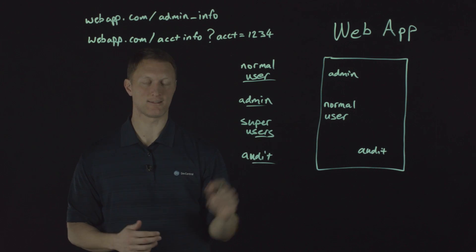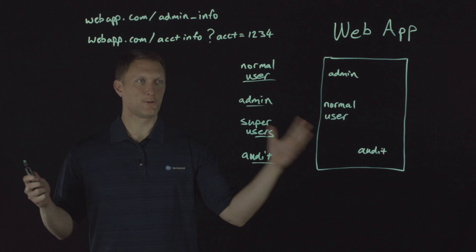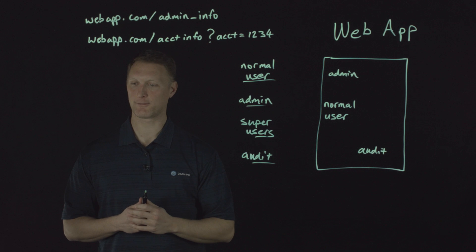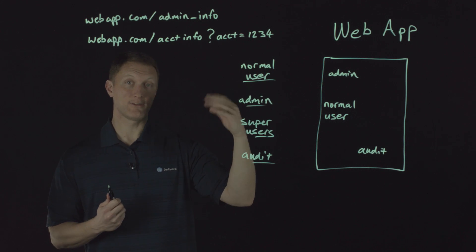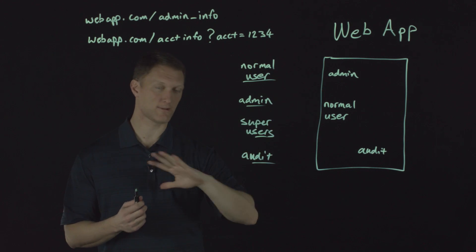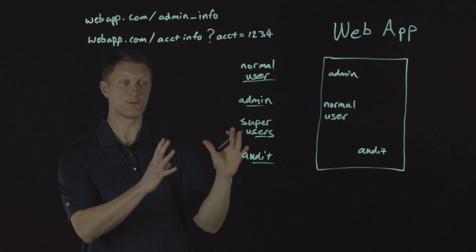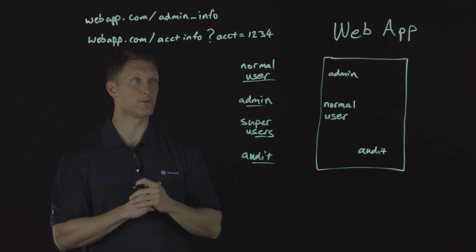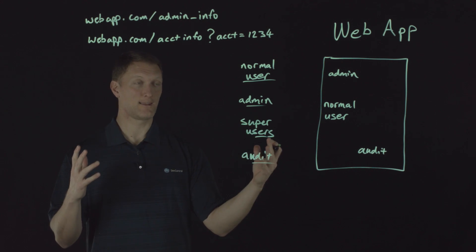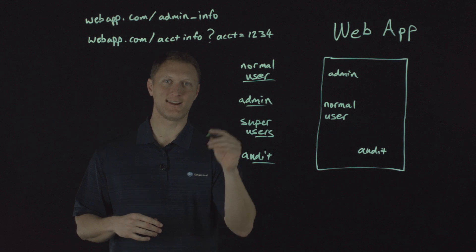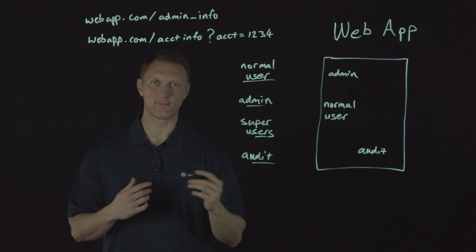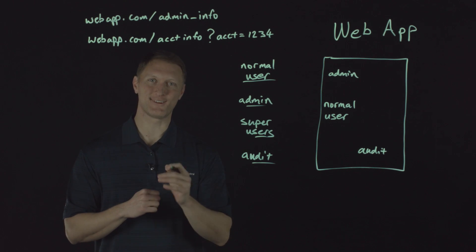Broken access control is the number five security risk on the internet today, based on the OWASP top 10 list. Web application firewalls can also help with some of this, though they're not the end-all be-all. Thanks for hanging in there with us learning about broken access control. Stay safe out there on the internet. If you enjoyed this video, make sure you subscribe to our Dev Central YouTube channel, and we'll see you out there in the community.